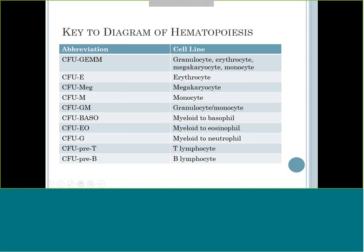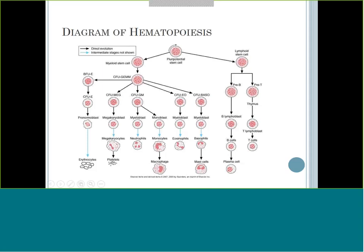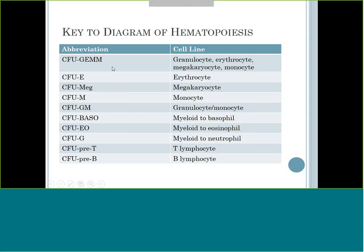All these initials on the chart indicate what cell lines they are targeting. CFU-GEM: G for granulocytes, E for erythrocytes, M for megakaryocytes, M for monocytes - those are the cell lines CFU-GEM is dedicated to. CFU-E is just referring to the erythrocyte line alone. Please get to know what each CFU targets for cell lines, so that if asked on a test - for example, CFU-GEM targets what? - you'll know granulocytes and monocytes.